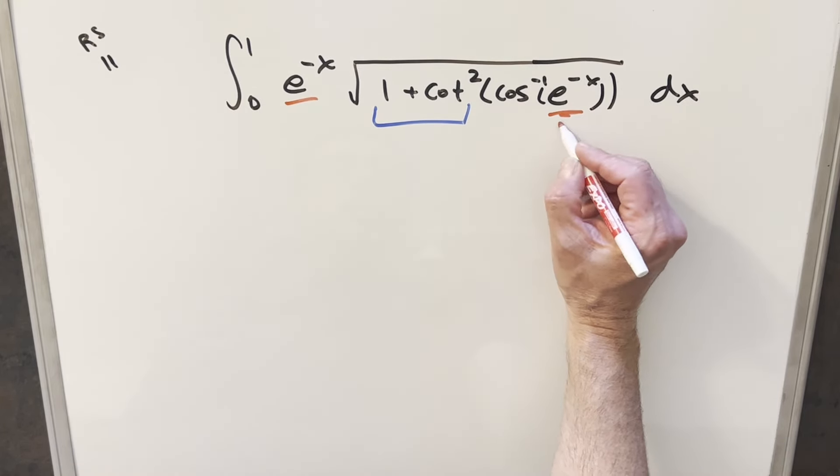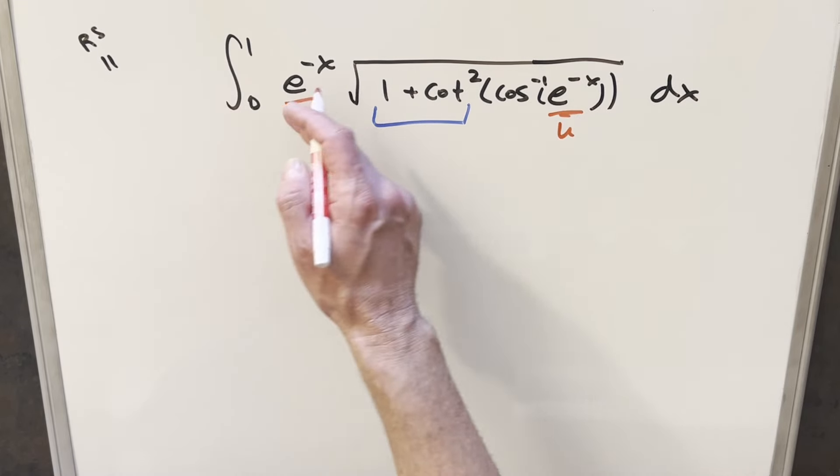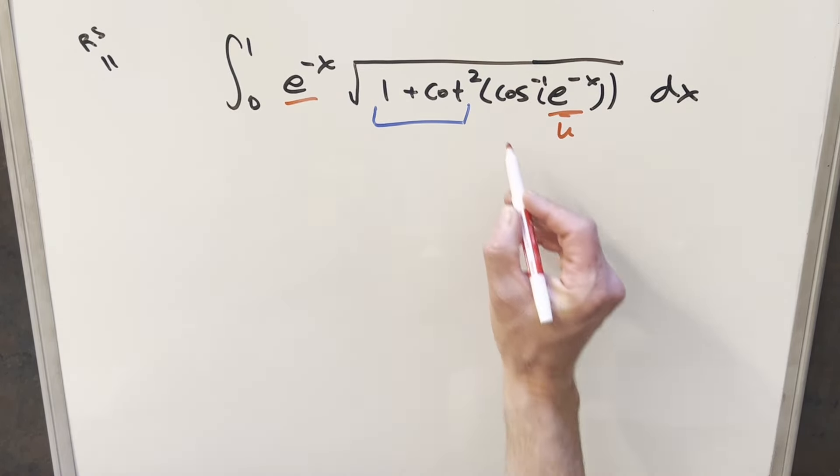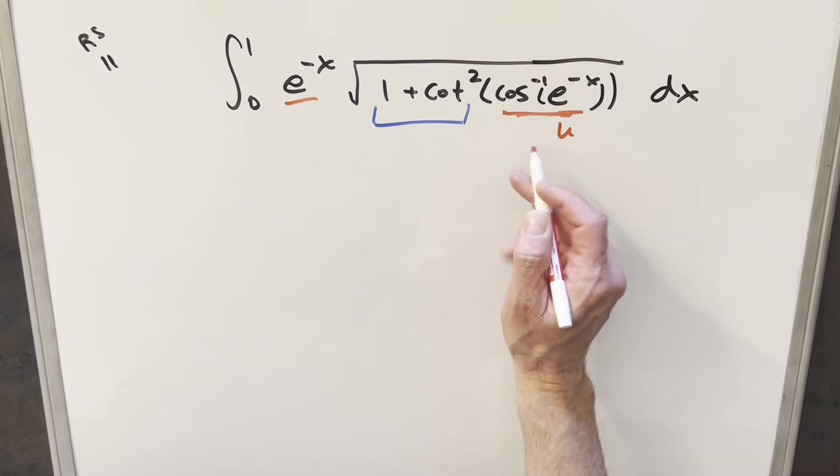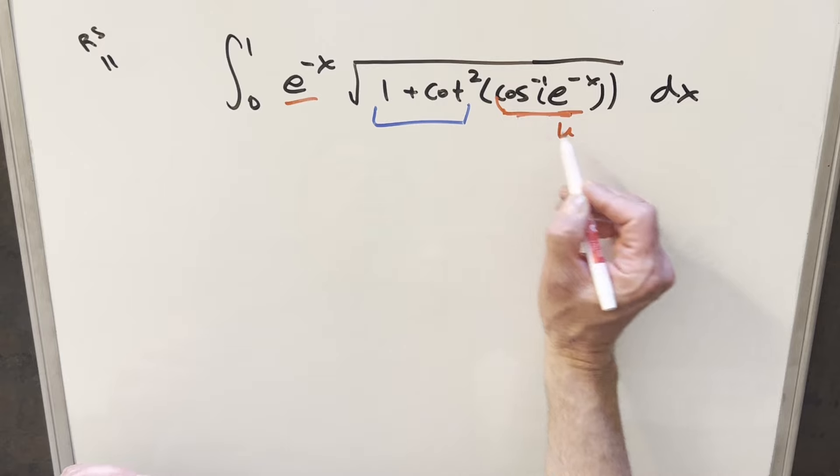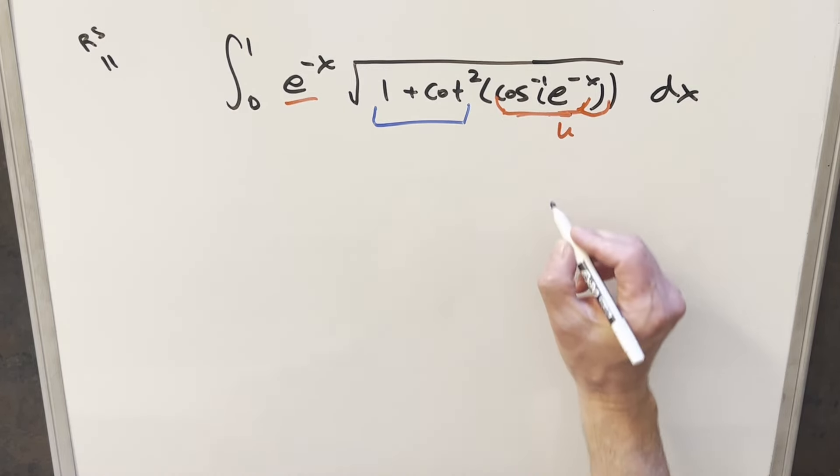But actually, what I want to think about first is this u substitution, because the derivative of e to minus x is going to be minus e minus x. So this is clearly going to help us. But then this here is actually still kind of a mess even after that u substitution. So what if I just extended my u substitution and made it this whole piece right here? Let's see how this goes.